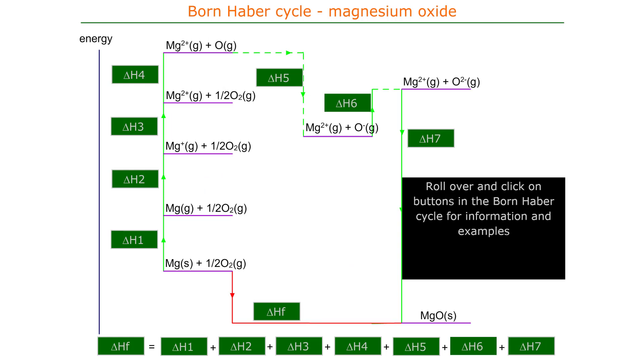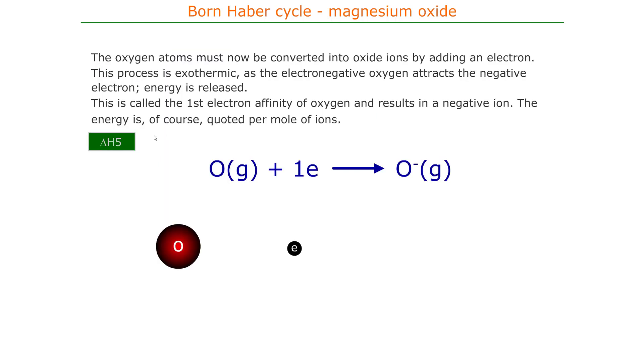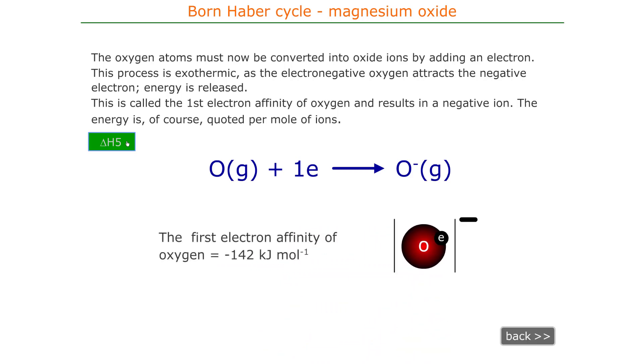We've got magnesium in gaseous ions. However, the oxygen needs to be turned into oxide ions, a two-stage process. The first step is exothermic. The oxygen gains an electron, the first electron affinity, where the electron releases energy as it bonds to the electronegative oxygen.